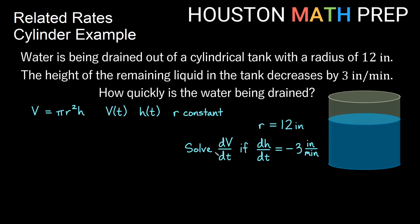So we know that r is 12 inches, and we want to solve dV/dt when dh/dt is equal to negative 3 inches per minute. So let's go ahead and differentiate our equation over here that relates volume and height with respect to time.